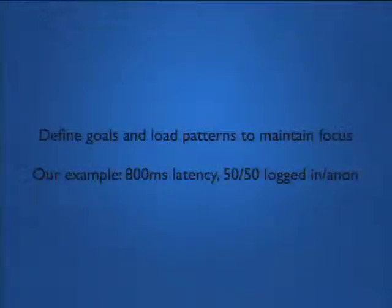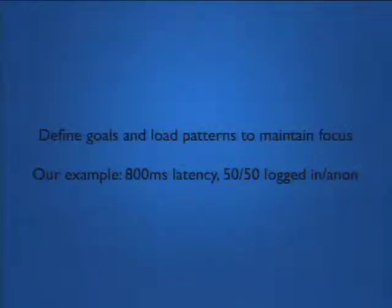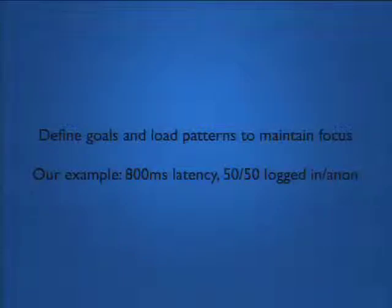So we define goals and load patterns to maintain focus. For our example: it's split 50% anonymous users, 50% authenticated users — by far the worst case, because you have no one place to focus. The anonymous users are just as important as the authenticated users because they lead to new users, but the authenticated users are paying, so we can't ignore them either. Our goal is 800 millisecond latency — from the time the request starts, we want the first bit of actual site data delivered within 800 milliseconds. Note that this does not take into account front-end rendering time at all — that is its own presentation, its own conference. We're just going to talk about the Drupal bootstrap and page output.